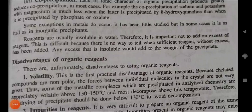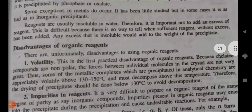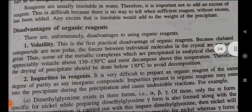Disadvantage 1 — Volatility: This is the first practical disadvantage of organic reagents. Because the related compounds are non-polar, the forces between individual molecules in the crystal are not very great. Thus, some metallic complexes used in analytical chemistry are appreciably volatile above 130 to 150 degrees Celsius, and most decompose at about this temperature. Therefore, the drying of precipitates should be done below 130 degrees Celsius to avoid decomposition.